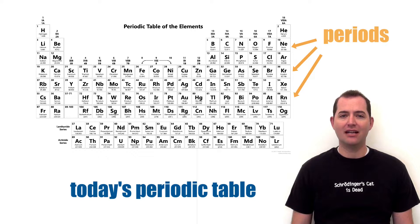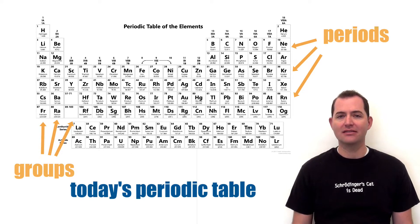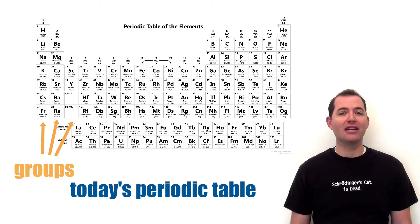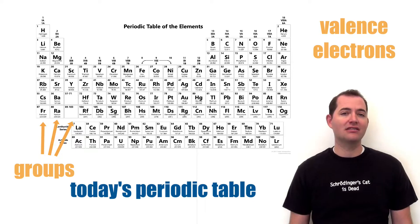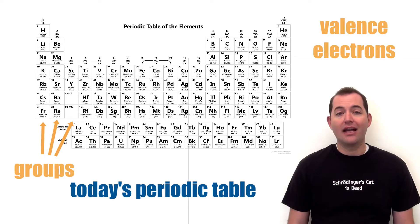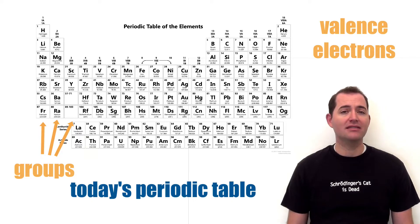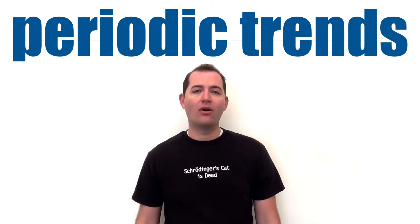Mendeleev organized the periodic table into rows called periods and columns called groups or families. These groups have similar characteristics because they have the same number of valence electrons — the electrons on the outer edge of an atom that are very important in identifying the chemical properties of an element.